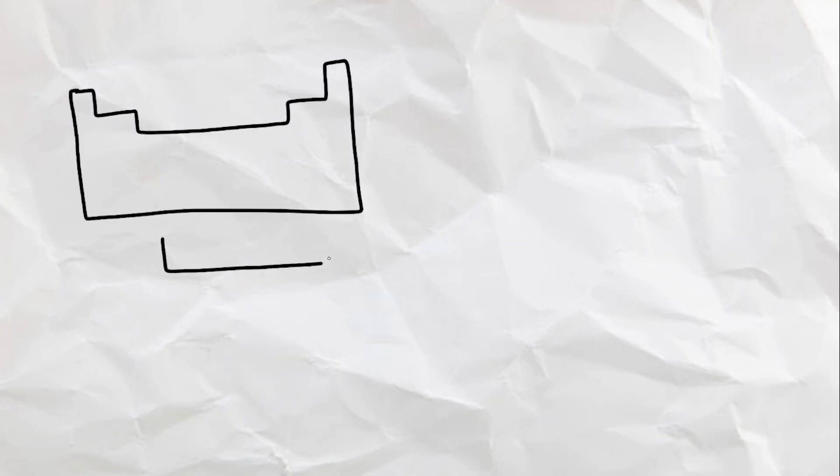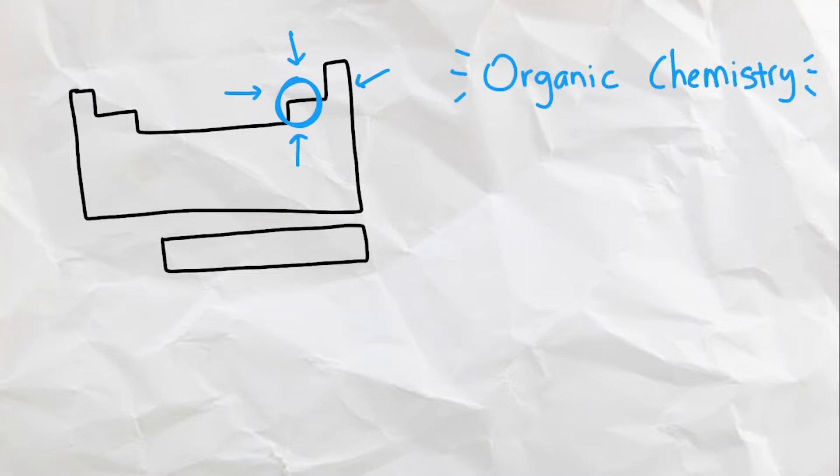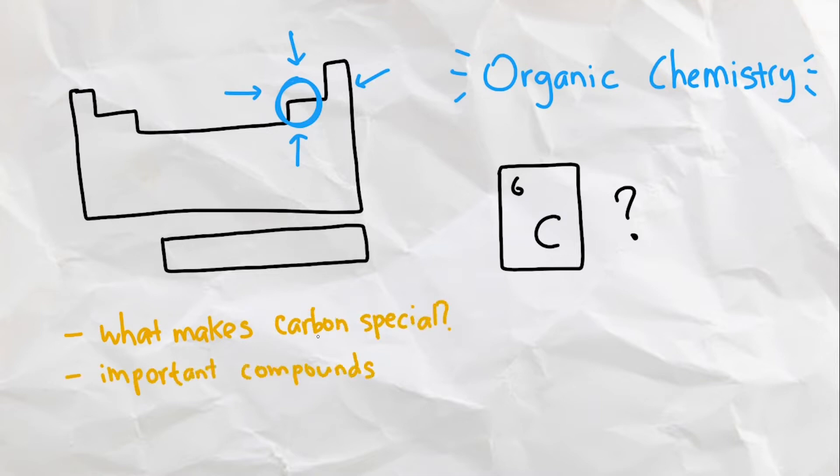Carbon is the most important element on the periodic table in terms of life. So important that there is literally an entire field of study based on studying carbon, organic chemistry. So why is carbon so crucial for life? In this video, we will go over what makes carbon special, some of the most important carbon-containing compounds, and other uses of carbon.